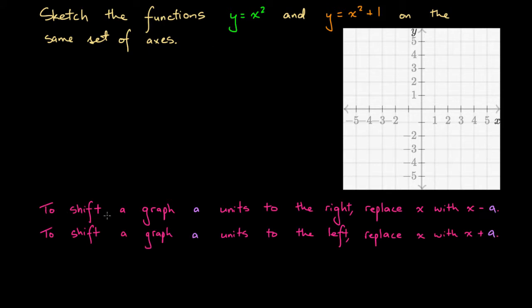Let's quickly review what horizontal shifting of graphs is about. To shift a graph a units to the right, we replace x with x minus a. Notably, this works for both functions and non-functions — relations that aren't necessarily functions. To shift a graph a units to the left, we replace x with x plus a. Now, what about shifting up and down?